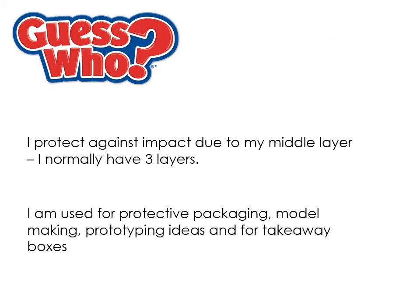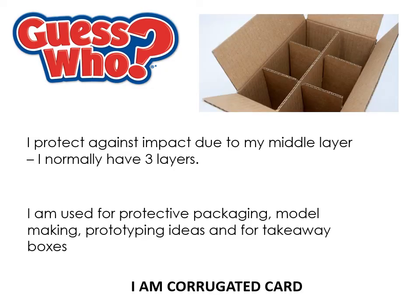Corrugated card comes up a lot at GCSE and A-level. It normally has three layers and protects against impact. It's used for protective packaging, prototyping, and takeaway boxes. It's lightweight, keeps heat in, stays quite rigid, and can have basic printing on it. It's primarily used as an outer protective box for products in transit rather than the actual product packaging, because you can't print full colour directly onto it. It's also very recyclable.